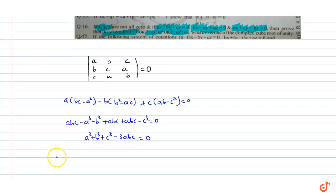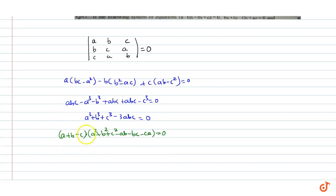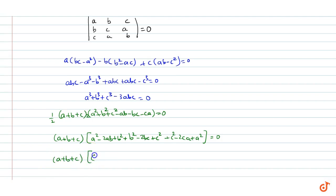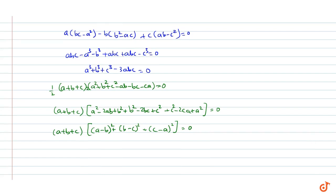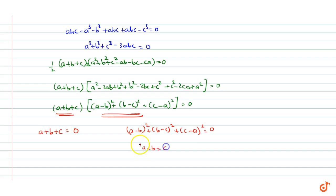अब इसको हम ऐसे लिख सकते हैं: (a + b + c)(a² + b² + c² - ab - bc - ca) = 0. इसको 2 से multiply और divide करने पर यह हो जाएगा: (a + b + c)[(a - b)² + (b - c)² + (c - a)²] = 0. That means या तो (a + b + c) = 0 हो, या फिर (a - b)² + (b - c)² + (c - a)² = 0, जिसका मतलब a = b = c है.